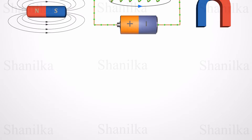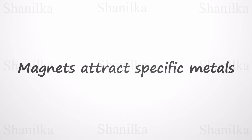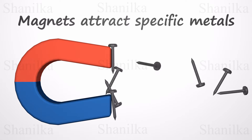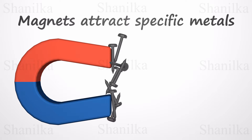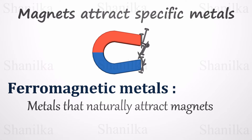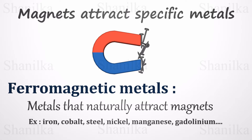The first thing we know about magnets is that magnets attract specific metals. Metals that naturally attract magnets are known as ferromagnetic metals. These metals will firmly stick to these magnets. For example, iron, cobalt, steel, nickel, manganese, gadolinium, and lodestone are all ferromagnetic metals.